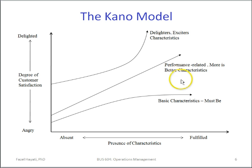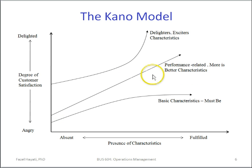The next is performance-related characteristics — more is better. These are characteristics where, if they are present, the customer is happier; but if they're not present, the customer does not miss them. For example, as Peter Schulte uses, the airline offers hot chocolate — that is a performance-related characteristic.